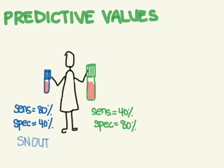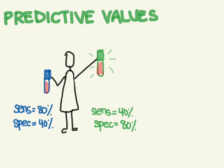Or we could be looking for a test that helps us rule in a disease. Which one would be better between these two tests to help us rule it in? It would be the test with high specificity, because a test with high specificity when it's positive helps us rule in a disease.